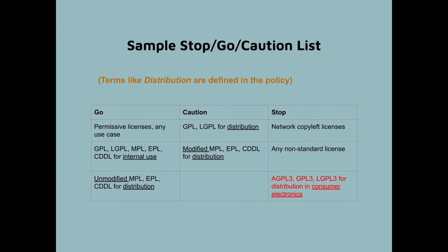One more point about AGPL: it contains mostly all the same terms as GPL 3. This example policy puts all of the version 3 licenses — GPL, LGPL, and AGPL version 3 — in a category that prohibits use in consumer electronics without specific review. That is because those licenses contain a so-called anti-TIVOization provision that requires a distributor to share the code and information necessary to reinstall modified software on consumer devices. Many companies are concerned that doing this will cause support or security problems for their products.